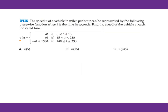v(t) is the speed of a vehicle in miles per hour. t stands for the time in seconds. Find the speed of the vehicle at each indicated time. For t equals 5, you have to plug in the first function. That is 4 times 5, which equals 20.